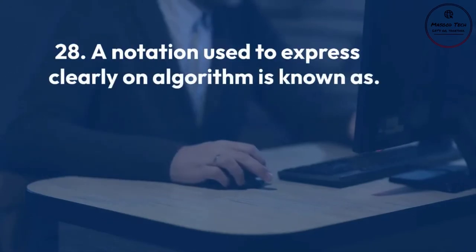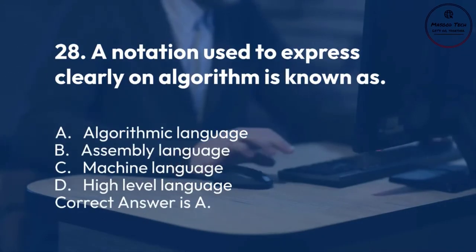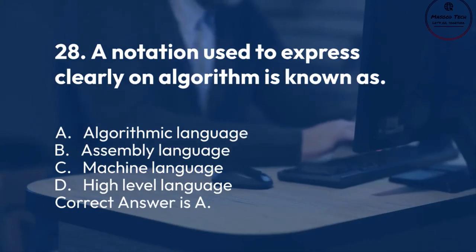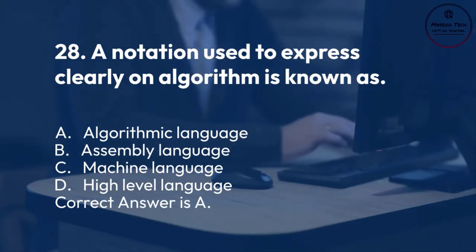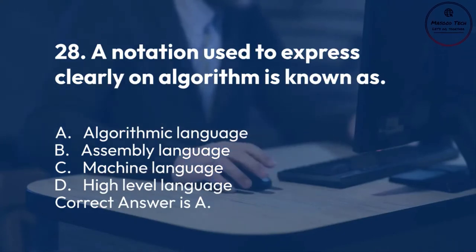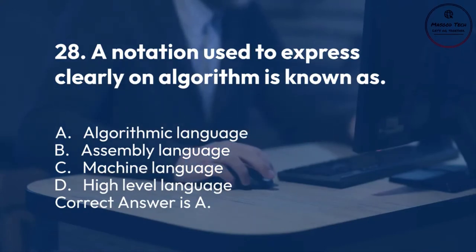Number 28. A notation used to express clearly an algorithm is known as: A. Algorithmic language. B. Assembly language. C. Machine language. D. High-level language. Correct answer is A.